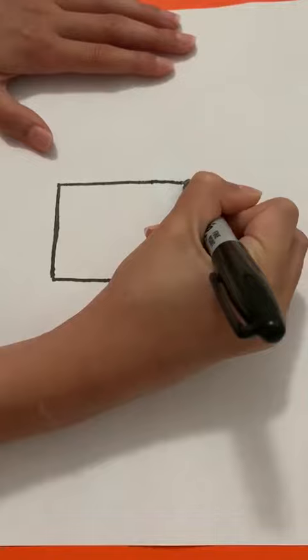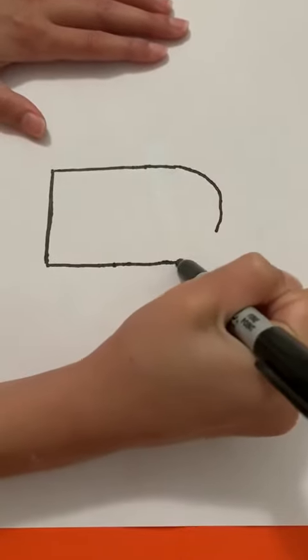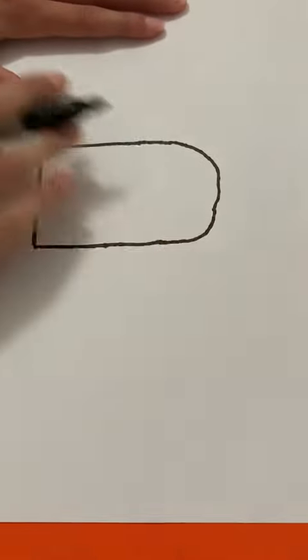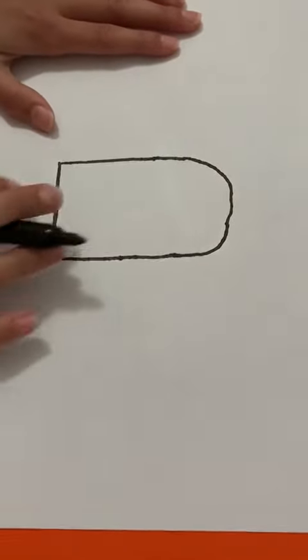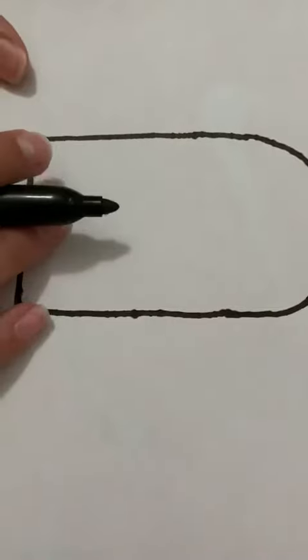And now it's almost like we're drawing a C, just like that. Almost like a half-cut oval. So we've got our popsicle base.